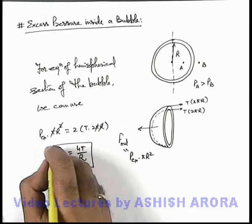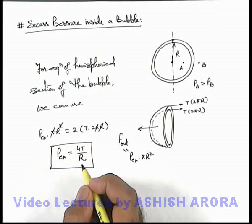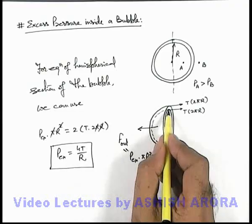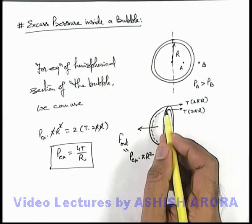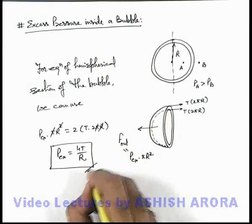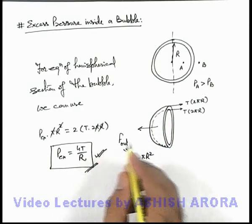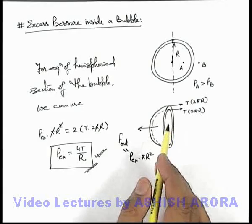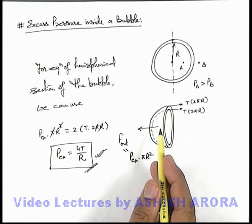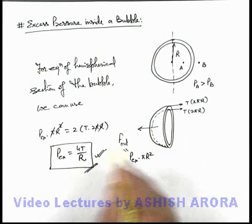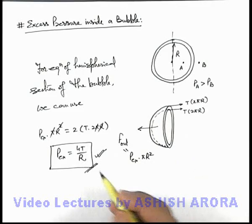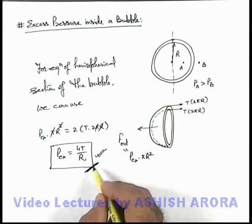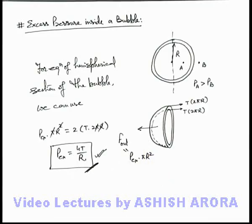This is exactly double that of the excess pressure inside a liquid drop because here there are two liquid surfaces, whereas in case of a drop only outer surface exists. That's why the excess pressure in a soap bubble or a liquid bubble is double than that of the liquid drop of same radius made up of same solution. So just be careful about this expression of excess pressure inside a bubble.